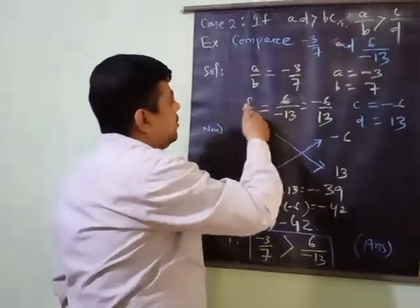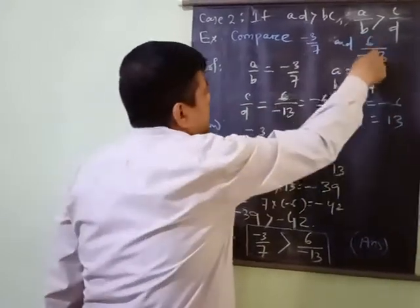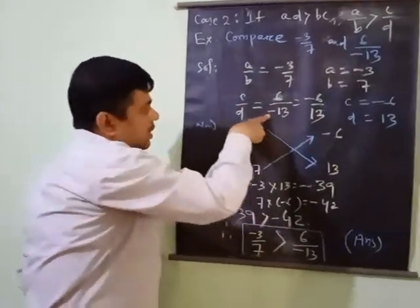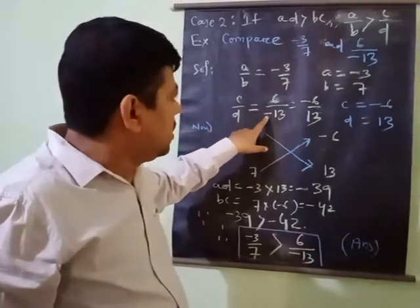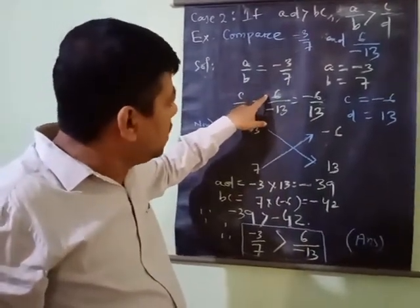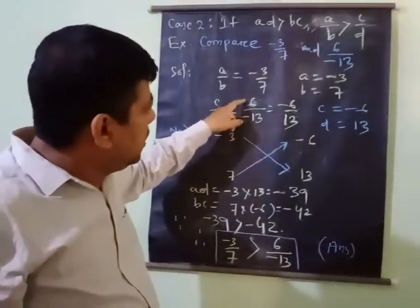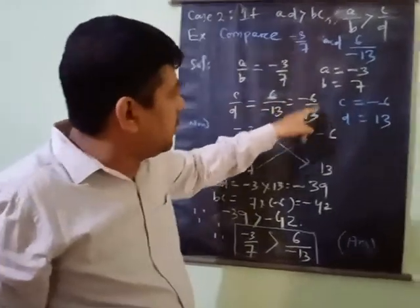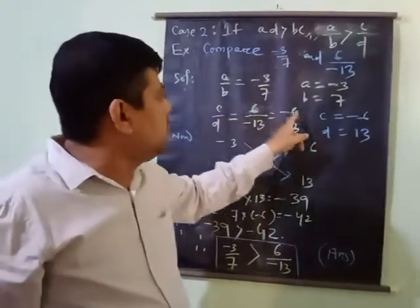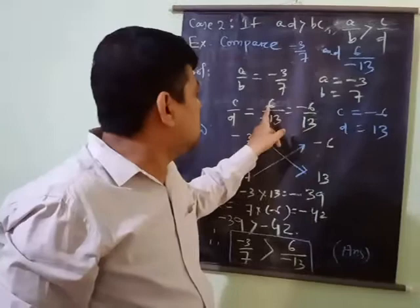Similarly, C by D: C by D is equal to 6 divided by minus 13, but minus sign here in the denominator. So it is being shifted to numerator by dividing sign plus divided by minus, which gives minus 6 upon 13. Now C is equal to minus 6.